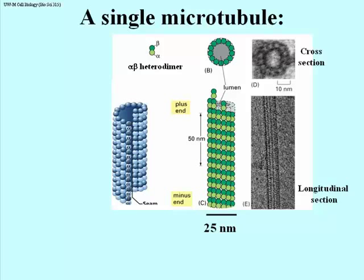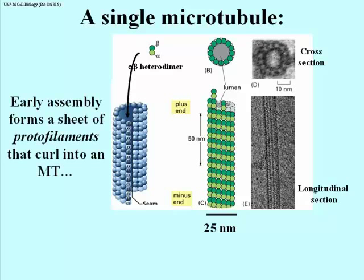Let's take a look at a single microtubule. The alpha-beta heterodimers will add to each other to form a flat sheet called a protofilament. When it gets long enough and wide enough, that sheet will curl — as you see in the blue microtubule image. Eventually a seam will form and you will get an actual tubule. The alpha-beta heterodimers that aggregate to form the protofilament continue to add to a fully formed microtubule at the plus end to grow the microtubule.